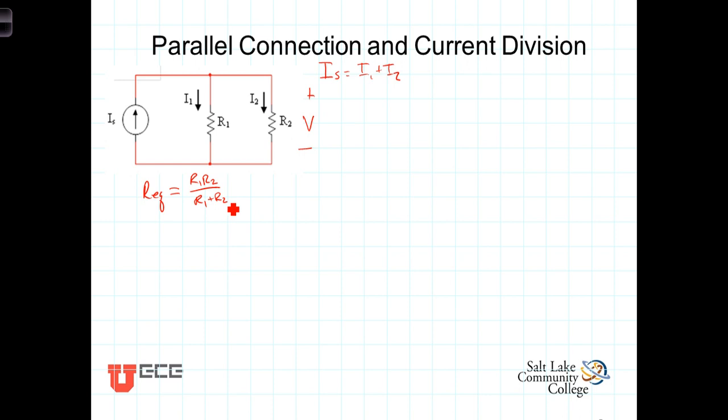We can then write an expression for V. The voltage across that parallel combination is equal to the current times the parallel combination, or V equals I sub S times R1 R2 over R1 plus R2.